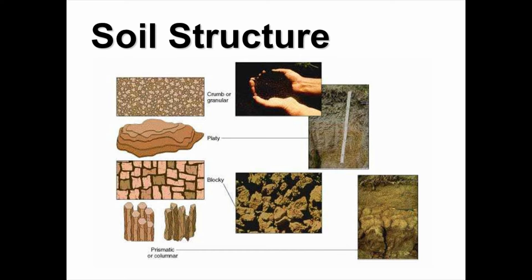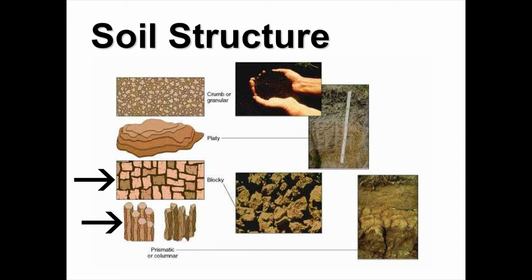In the topsoil, we like to have a crumbly or granular structure. Platy soil structure, just as it sounds, has particles stuck together in thin plates, which impede root movement and downward water flow — that's an undesirable structure. Deeper in the soil, we often find blocky, prismatic, or columnar structure, which also influences soil properties.